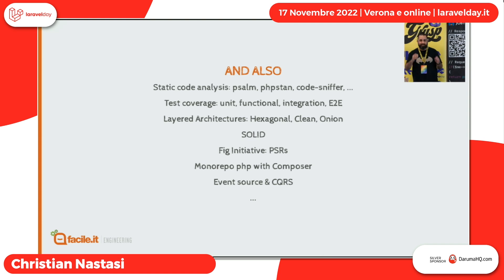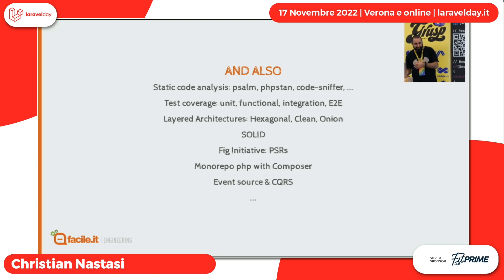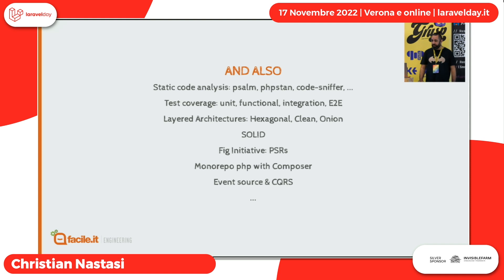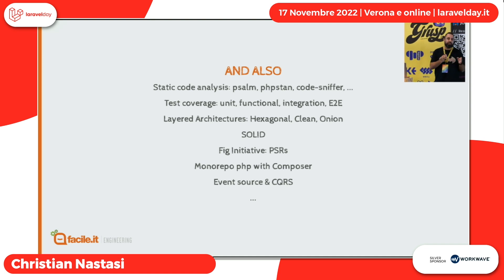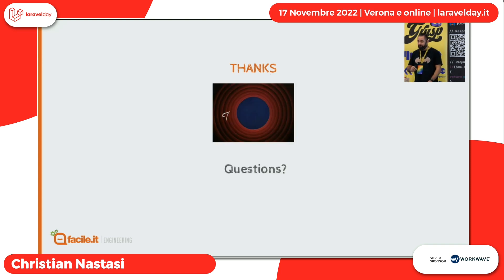Ci sarebbe tanto da parlare, purtroppo abbiamo solo 40 minuti. Altri piccoli suggerimenti: usate i tool di analisi del codice statico — tipo PHPStan, Psalm, Codesniffer, eccetera. Fate test unitari, funzionali, di integrazione, end-to-end. Cercate di usare un'architettura a strati come l'esagonale, la clean, l'onion. Usate SOLID. Usate i PSR perché vi permette di avere uno strato di astrazione molto interessante — sono sempre più le librerie che le usano, e potete interscambiare dei pezzi molto più facilmente. Se avete un sistema molto grande, spezzettatelo, fate un monorepo con Composer. Ci sono anche altri sistemi come Versioning, CQRS. Grazie.